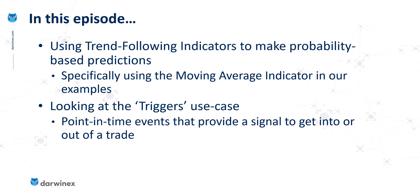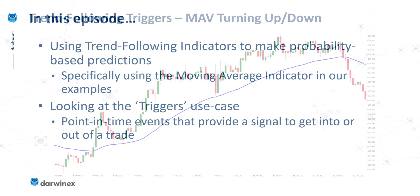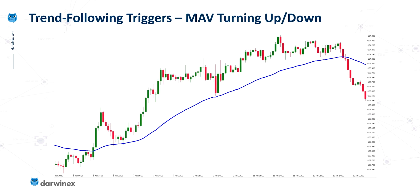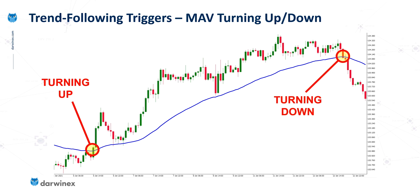Let's look at the main trigger points that these indicators provide us with. The first is when the moving average turns up or turns down. As you can see here, this is a turning point in the moving average line. When this happens, it usually means that the price has changed direction, and this change in direction of the line can provide information that we may decide to act on as part of our trading strategy. Likewise, when the moving average turns down, this again is a good indication that the price has started to change direction.